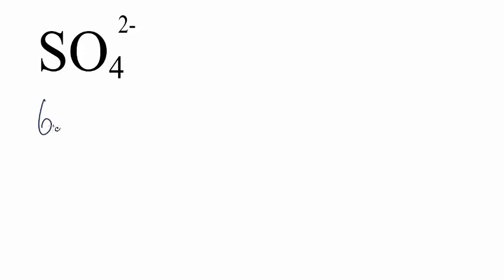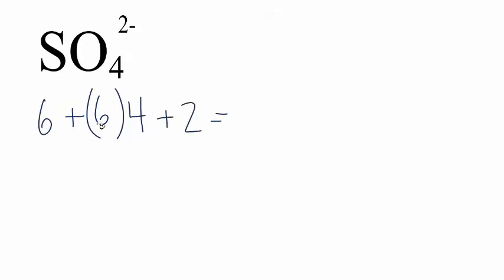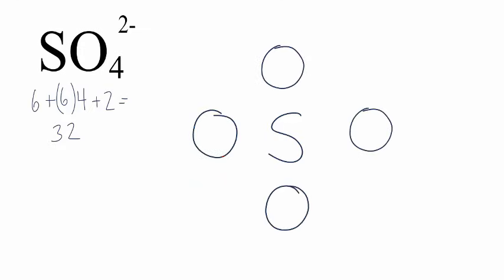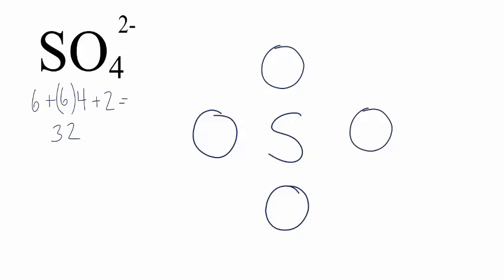For SO4 2-, the sulfate ion: sulfur has six valence electrons, oxygen also has six, and we have four oxygens. The two minus up here means we have an extra two valence electrons, so we'll add those. We have six plus 24, that's 30 plus two, giving us 32 valence electrons for this Lewis structure. We'll start by putting the least electronegative atom in the center — that's the sulfur — and then we'll put the four oxygens around it. We have 32 valence electrons; we'll put two between each of the atoms to form the chemical bonds, then go around and complete the octets on the oxygen atoms.